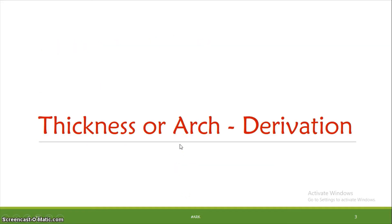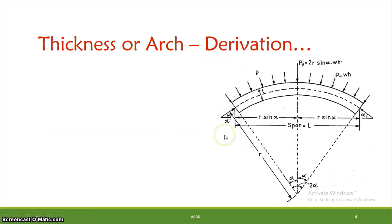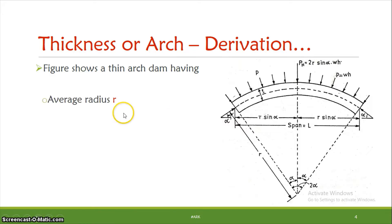Moving on to the thickness of the arch dam — we will talk about the derivation. Consider the thin arch dam: pressure is acting on the downstream side. This arch is a circle. Let this point be the center. The first parameter is the average radius. We study the two curves: intrados and extrados. From the center, the intrados and extrados give the difference — that is the average radius.